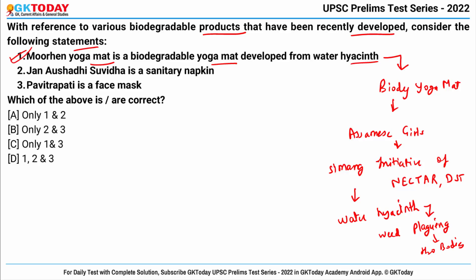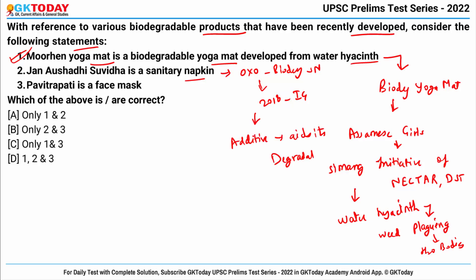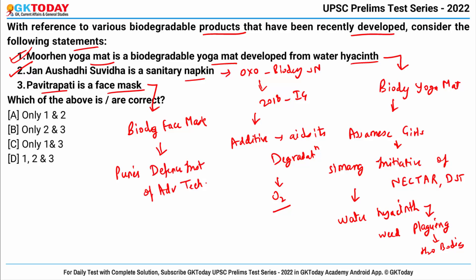Statement two says Jan Aushadhi Suvidha is a sanitary napkin. It is an oxo-biodegradable sanitary napkin launched in 2018 by the Indian government, where a special additive aids its degradation when it comes in contact with oxygen. This is correct. Statement three says Pavitrapati is a face mask — yes, it is a biodegradable face mask developed by Pune's Defence Institute of Advanced Technology based on the principles of Ayurveda.